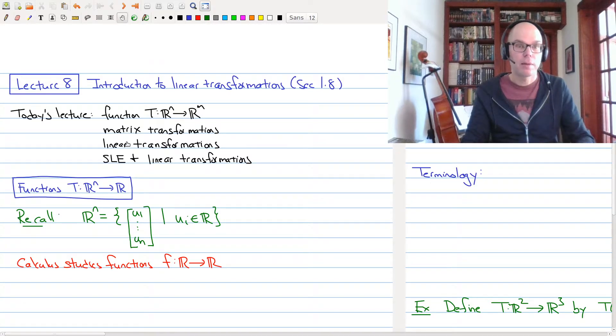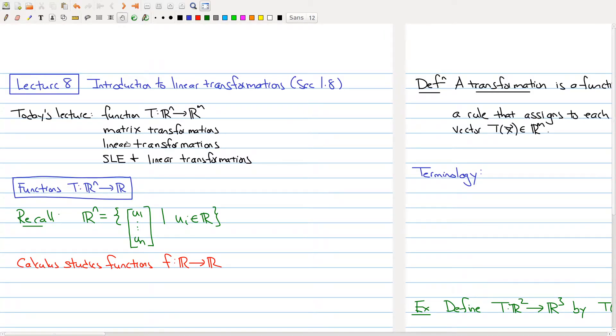But we're going to start at the basics. We're going to start with what is a function between Rn and Rm and talk about some of their properties and introduce each of these terms. So first of all, let's look at functions from Rn to Rm. Just recall that Rn is the set of all n-tuples, where each of the entries belong to R. So one way to think about this is this is all vectors in Rn.